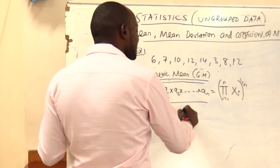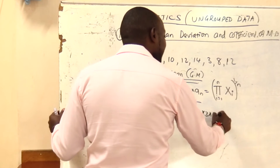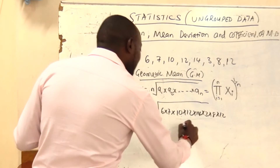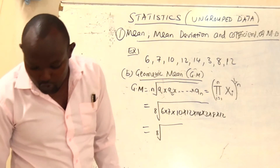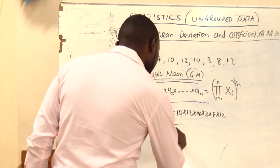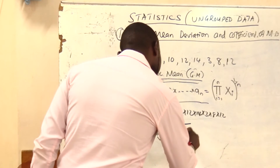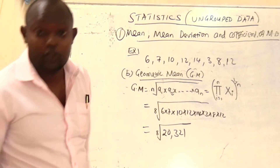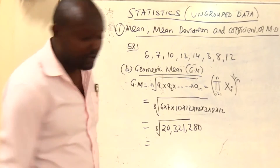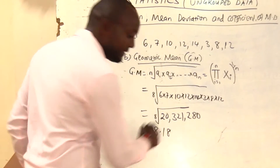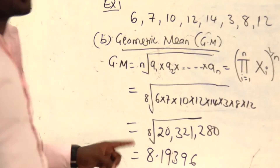That is the 8th root of the product of 6, 7, 10, 12, 14, 3, 8, and 12. When you get the product of these numbers, you get 20,321,280. Then you get the 8th root of that. An important note: many students get 8 times the square root — no, it is not the square root, it is the 8th root. Because I have 8 data, it will be the 8th root of that product.